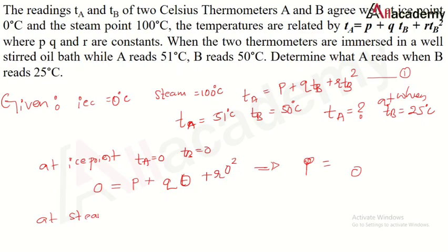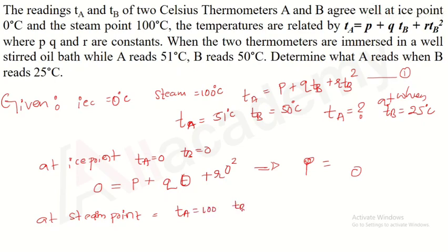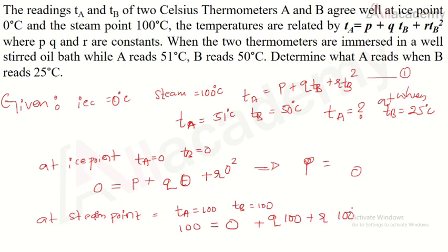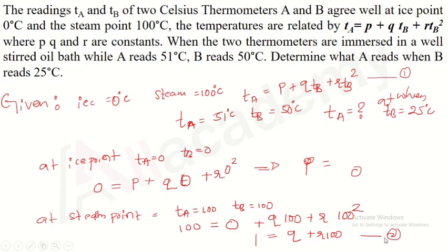Substituting the steam point values: 100 = 0 + q·(100) + r·(100)². Simplifying by taking 100 as common: 1 = q + r·100. This is equation 2.